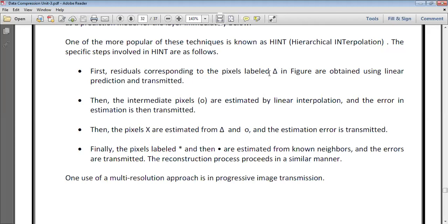Then the pixels X are estimated from the triangles and circles, and the estimation error is transmitted. Finally, the pixels star and dot are estimated from their known neighbors, and the errors are transmitted. The reconstruction process proceeds in a similar manner.